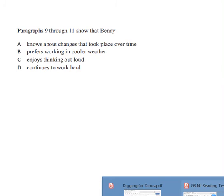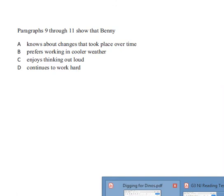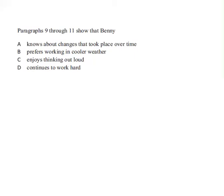We've talked about this in class before — there's a good answer and there's a better answer. So let's look at one of the questions. Here's our question: Paragraphs 9 through 11 show that Benny — A, knows about changes that took place over time; B, prefers working in cooler weather; C, enjoys thinking out loud; or D, continues to work hard. There are a lot of times that the test makers will ask you questions that pertain to a certain section — it might be paragraphs or lines in the story. It says paragraphs 9 through 11, so it's really important that we look back at the text to find those paragraphs.